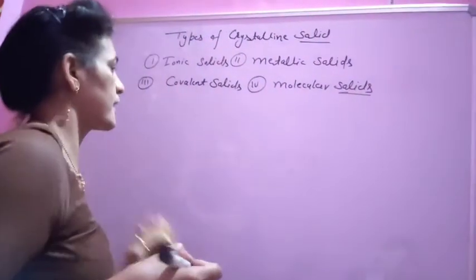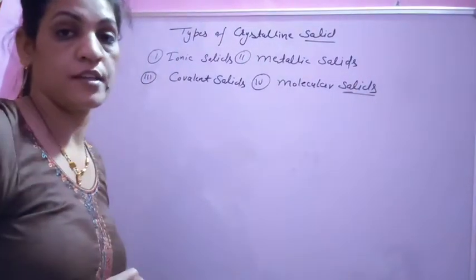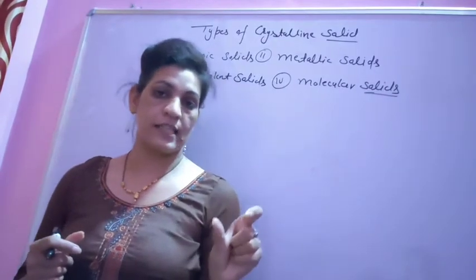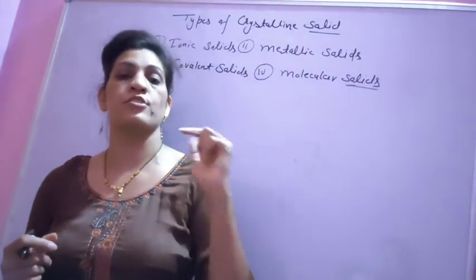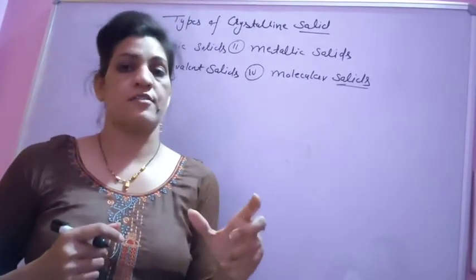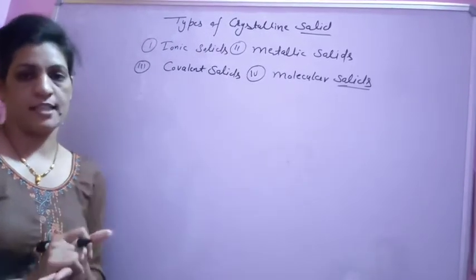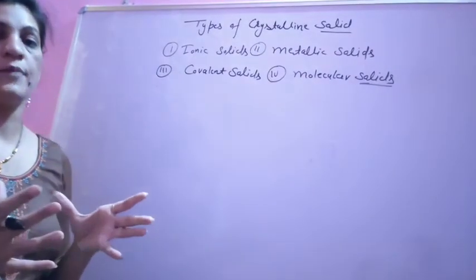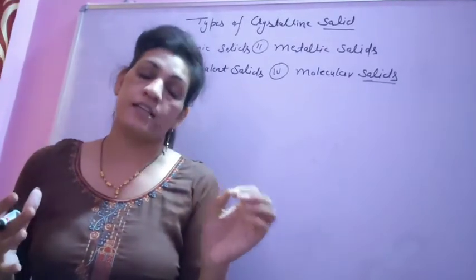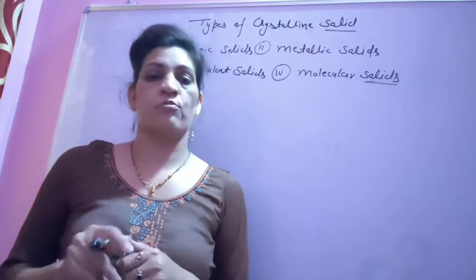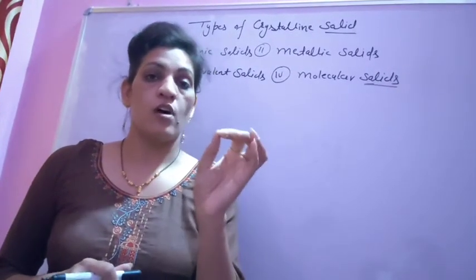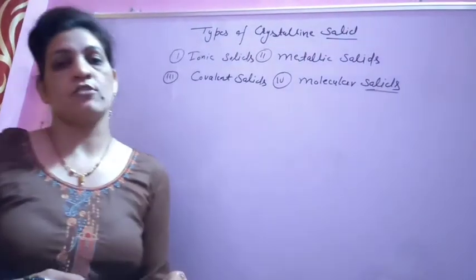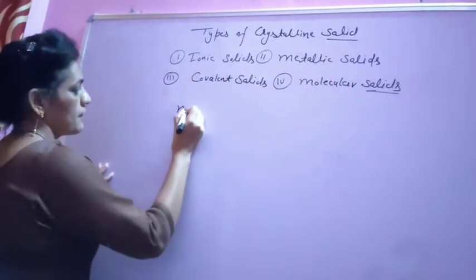What are the constituent particles of metallic solids? If we look at a metal crystal, the constituent particles are metal atoms. In a metallic solid, the atoms lose their outer electrons to form positively charged kernels, and the released electrons become mobile electrons that move freely. So the particles in metallic solids are positively charged kernels and mobile electrons.